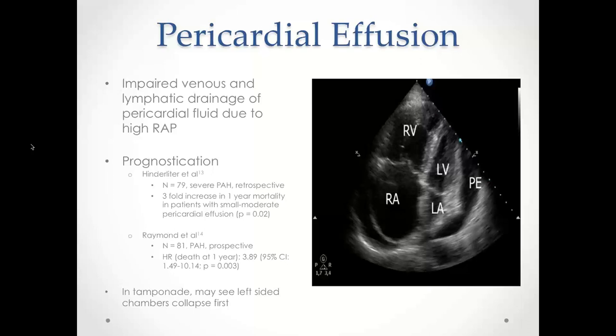An interesting consideration in pulmonary hypertension is that the right-sided chambers may be at higher pressure than left-sided chambers, so in the setting of tamponade you may actually see the left-sided chambers collapse first.